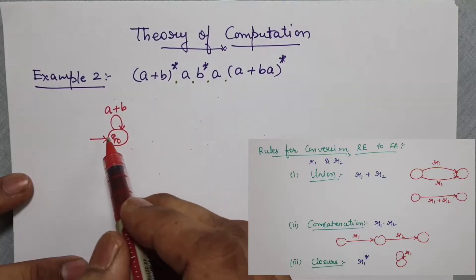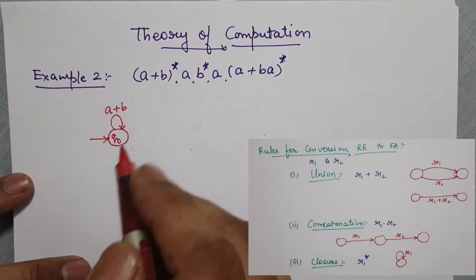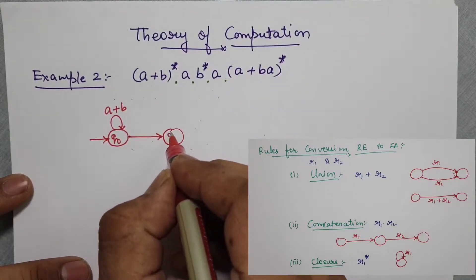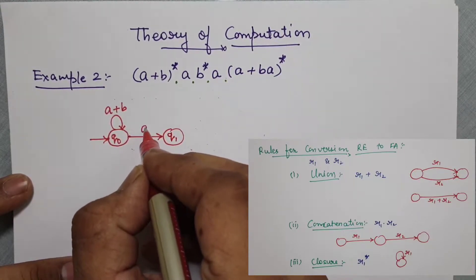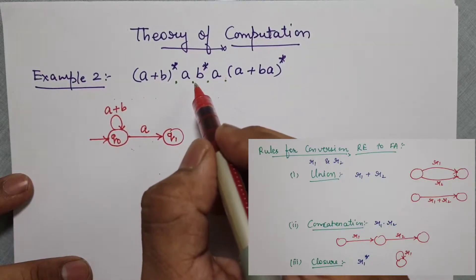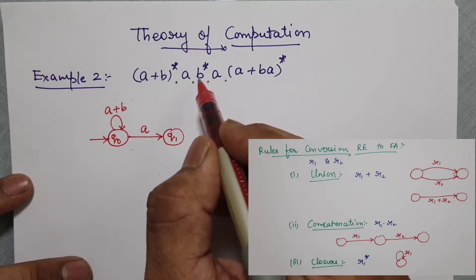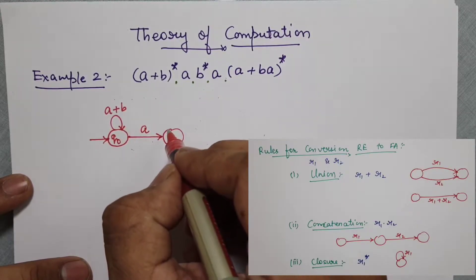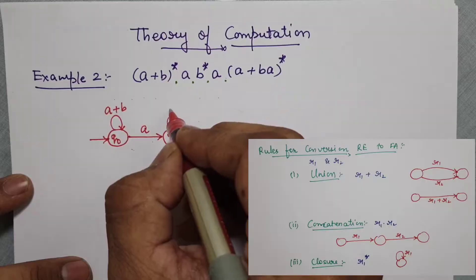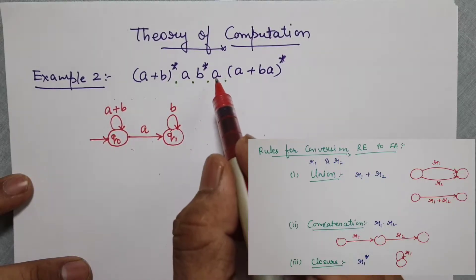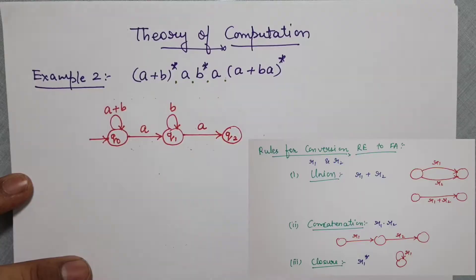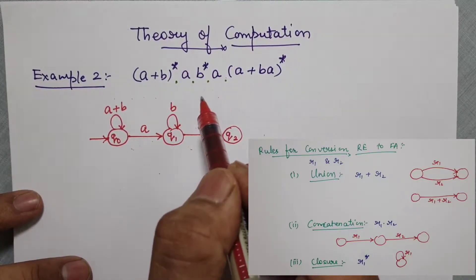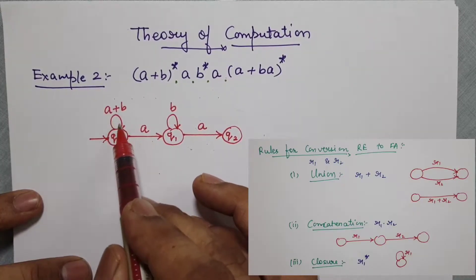So it is a self loop of a+b, then on reading a I am going to the next state. Then here we have the closure of b — this closure will not add a state, so here it will be b*.